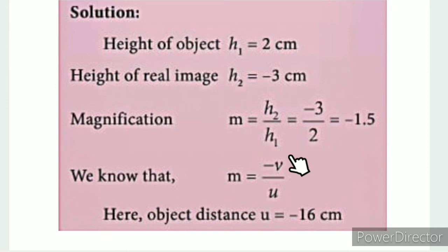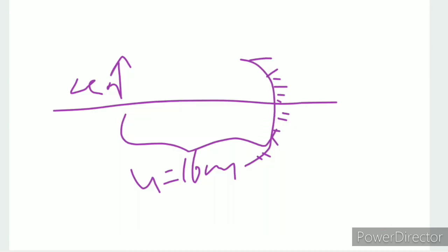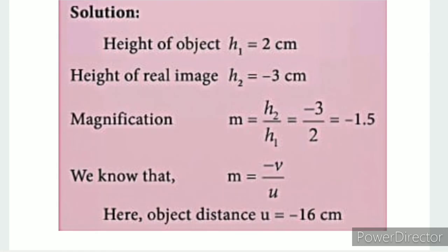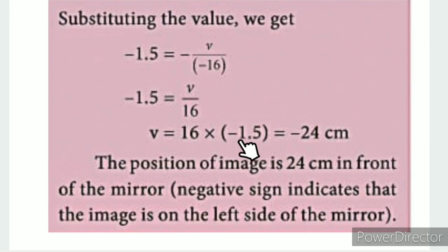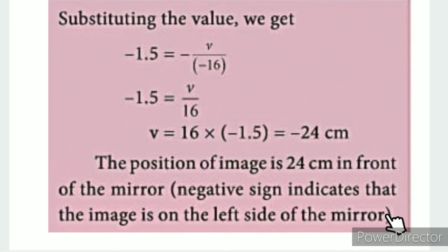The Cartesian sign convention uses origin P, and the object on the left-hand side is given a minus symbol. We get: minus 1.5 equals minus v divided by minus 16, and this minus-minus becomes plus. Therefore v equals minus 24 cm. The position of the image is 24 cm in front of the mirror. The negative sign indicates that the image is on the left side of the mirror.